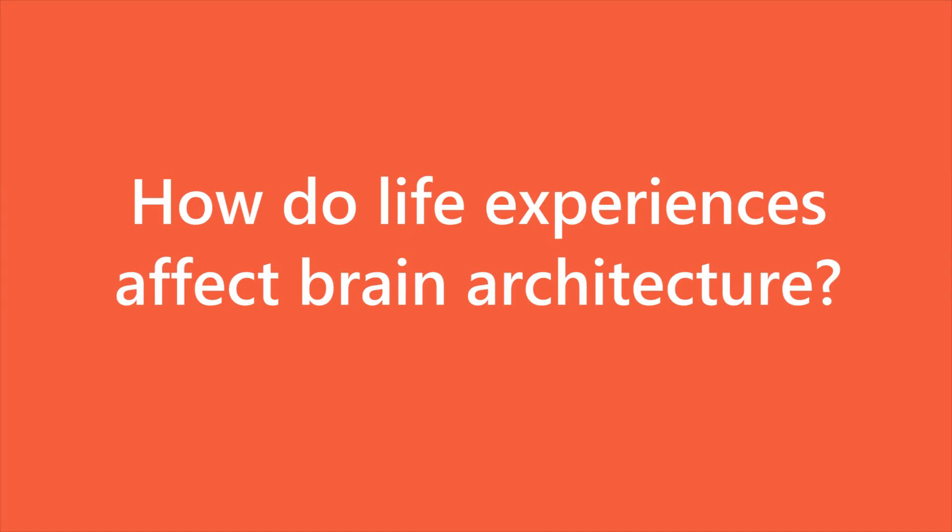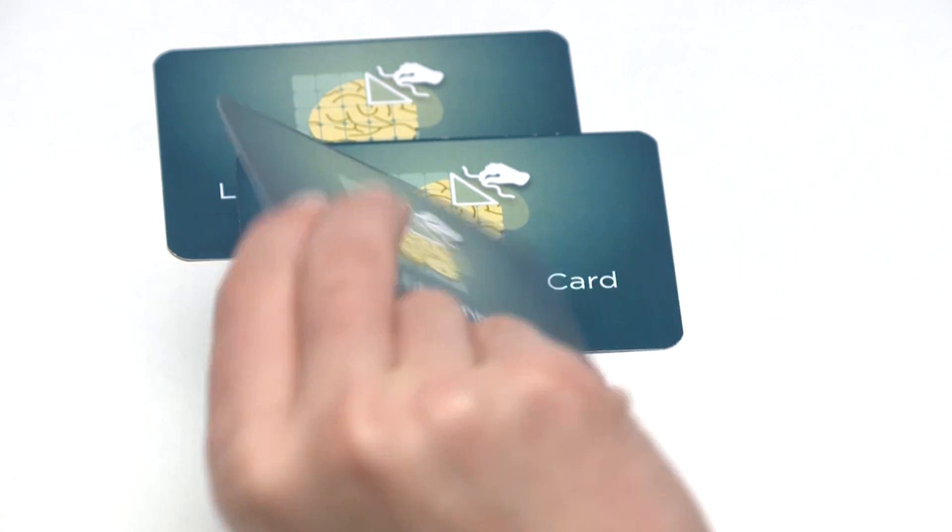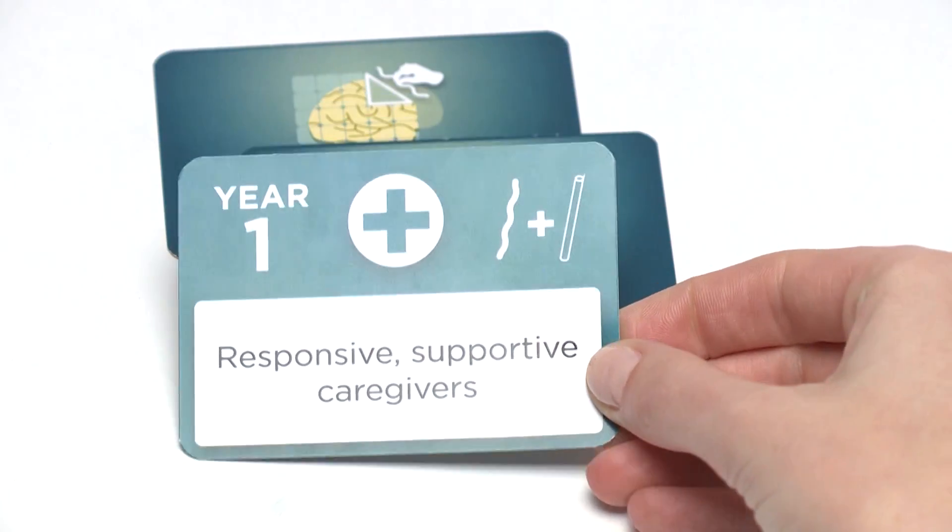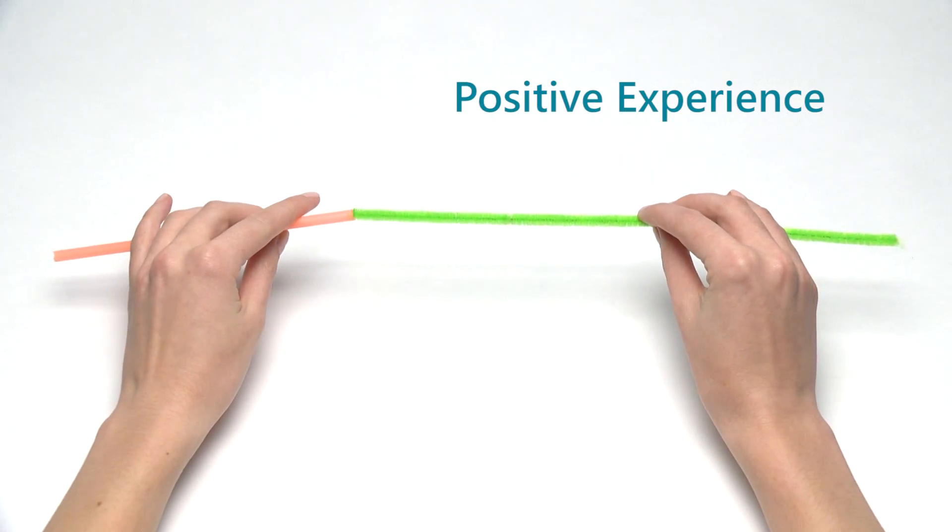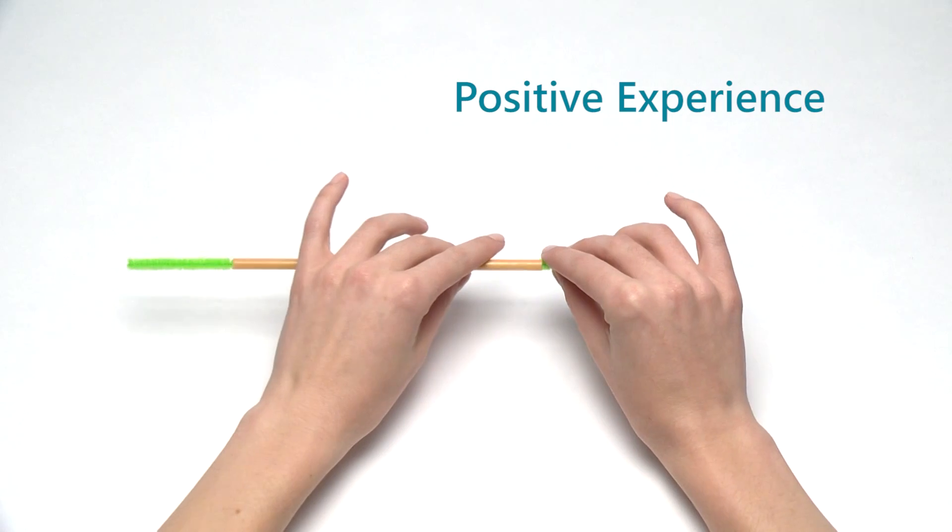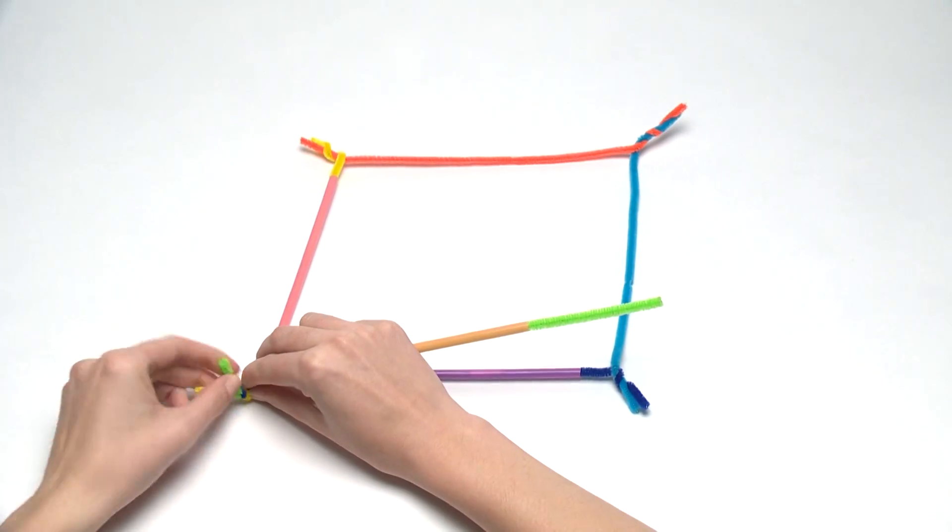How do life experiences affect brain architecture? If you draw a positive experience, you'll collect a pipe cleaner and a straw as building materials, because positive experiences, like learning a new skill, are the building blocks of strong brain architecture.